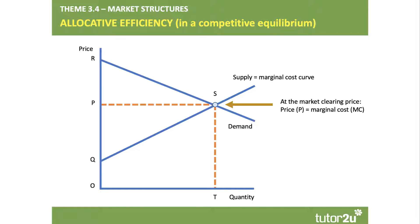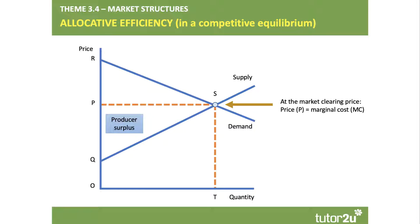Let's take a look at a competitive market and how allocative efficiency is achieved. There's a demand and supply curve here — the supply curve is the marginal cost curve, and the demand curve reflects the willingness and ability of consumers to pay for a good or service. At the equilibrium price P, output Q, at point S, that price clears the market — there's no shortage, no surplus, no disequilibrium. So at the market clearing price, price equals marginal cost.